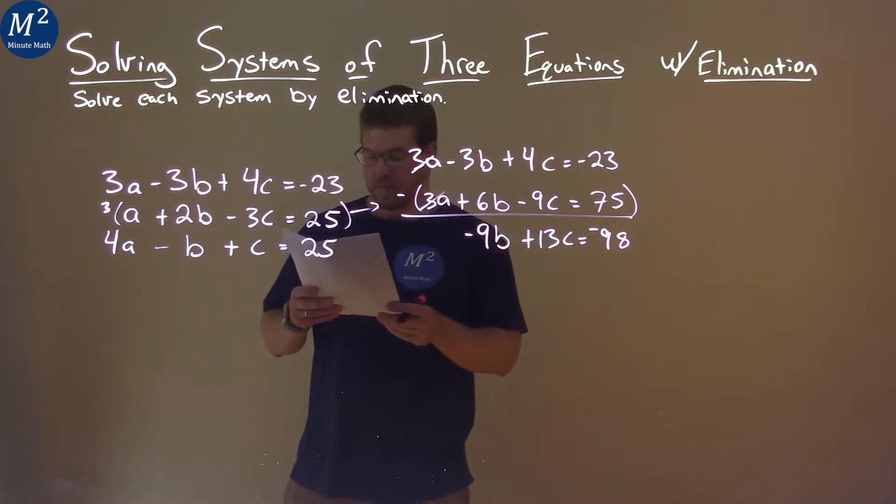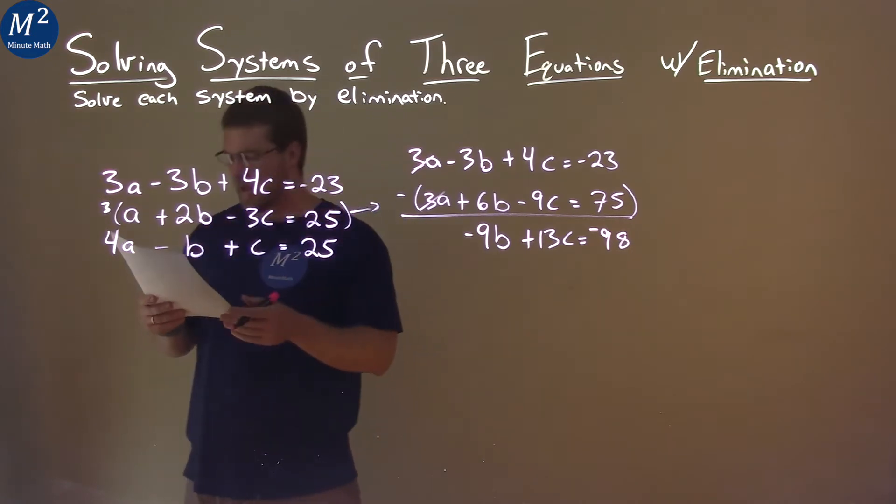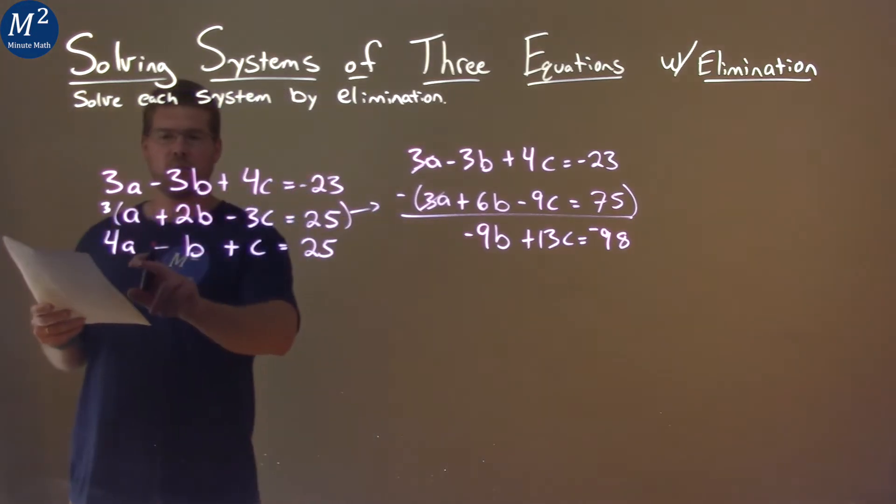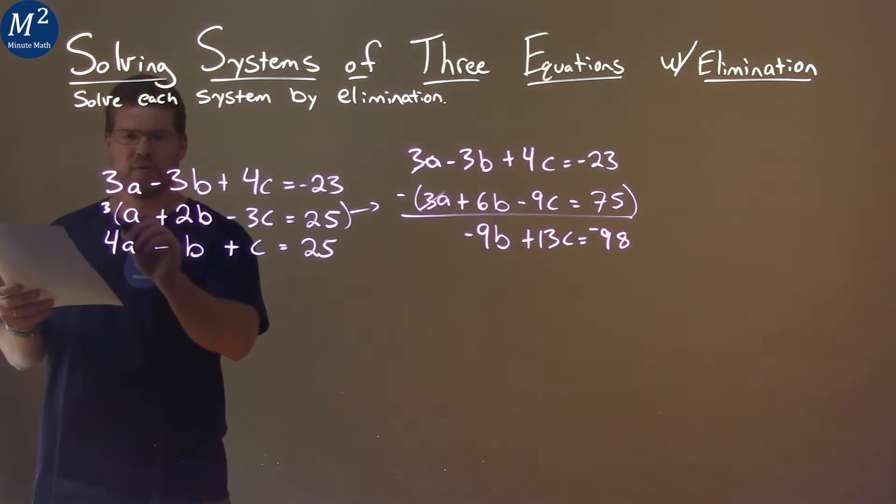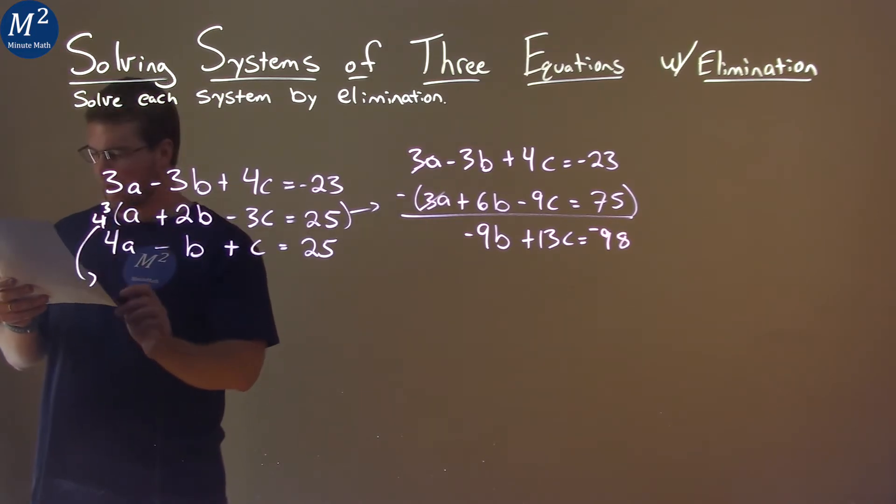So now what we've got to do is we'll try to see if we can get another way to eliminate A. Well, we have A here and 4A. So we take the second equation, if we multiply it by 4 here, we put it down there, what do we get?